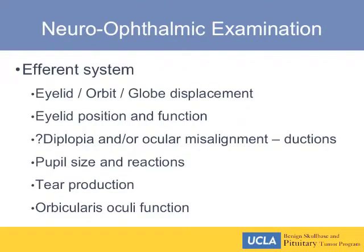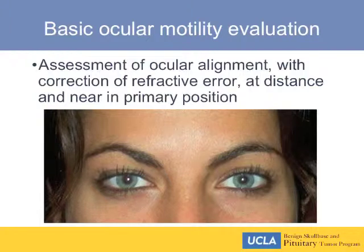Looking at the efferent system, we're looking at lid position, the orbit, whether or not there's globe displacement, eyelid position and function, whether there is double vision or misalignment of the eyes, pupil size and reactions, and tear production and orbicularis function. Assessment of ocular alignment with correction of refractive error — ask them to put their glasses on at distance and near in primary position. Not every patient with strabismus or misaligned eyes has an active awareness of the displaced image, especially if vision is reduced in one eye. So it's pertinent for you to look at the alignment of their eyes.